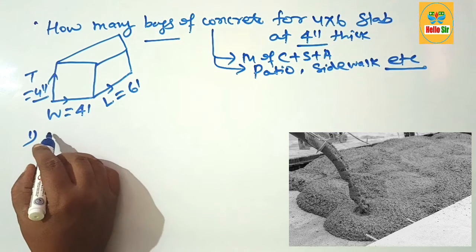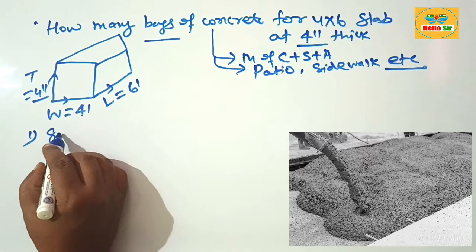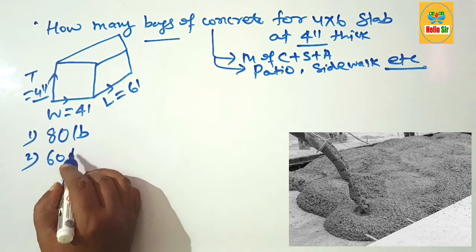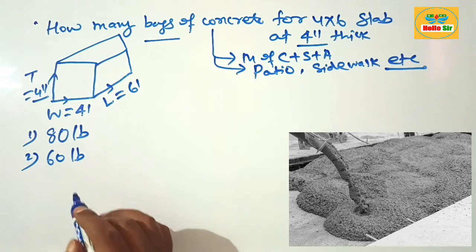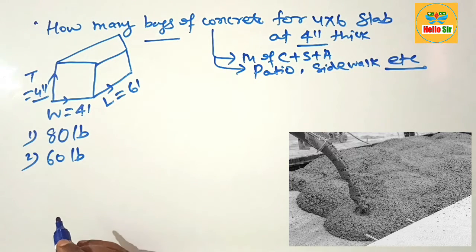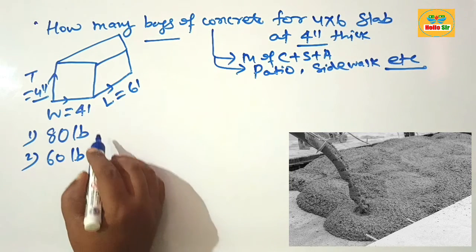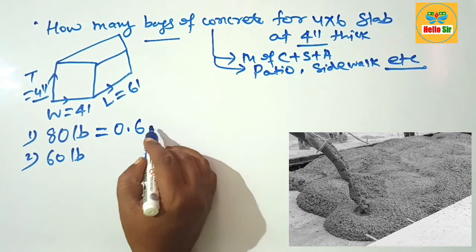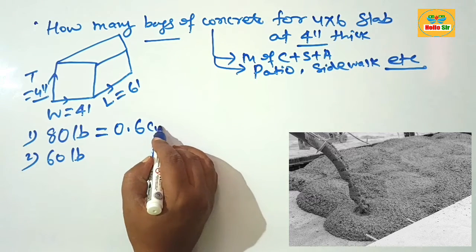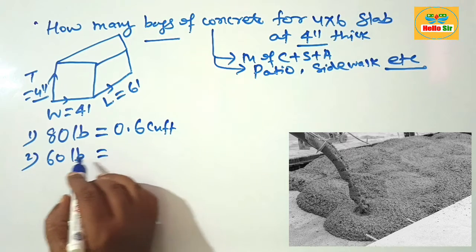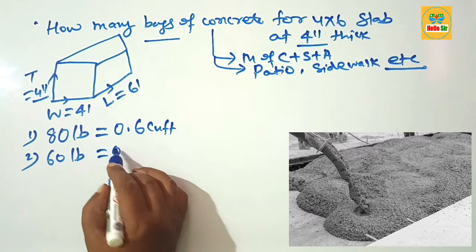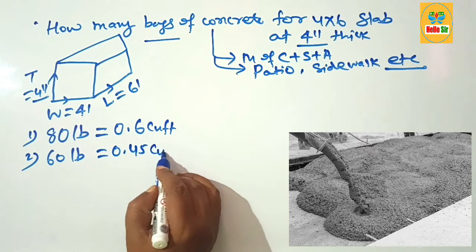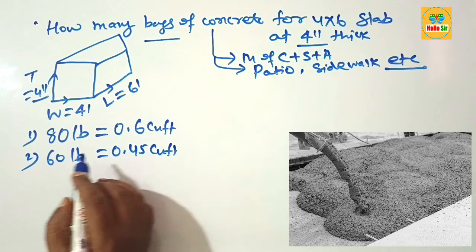Bags of concrete come in different sizes: 80 pound bags, 60 pound bags, and smaller bags like 40 lb and 50 lb. Each 80 pound bag of concrete yields a volume of about 0.6 cubic feet, and each 60 pound bag yields a volume of about 0.45 cubic feet.